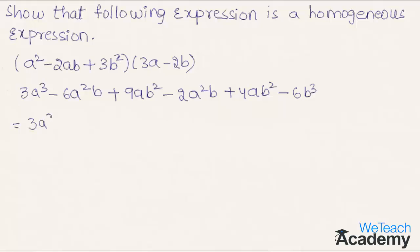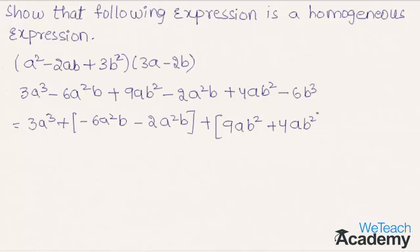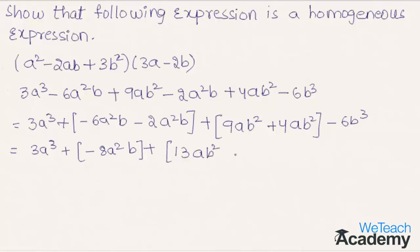Grouping the like terms: 3a cubed, plus (minus 6a squared b minus 2a squared b), plus (9ab squared plus 4ab squared), minus 6b cubed. Simplifying, this becomes 3a cubed minus 8a squared b plus 13ab squared minus 6b cubed.